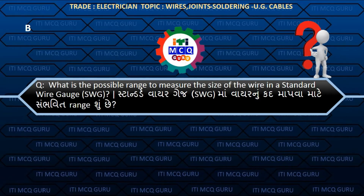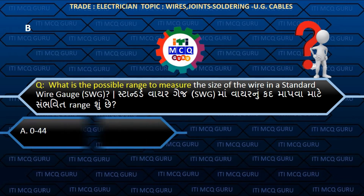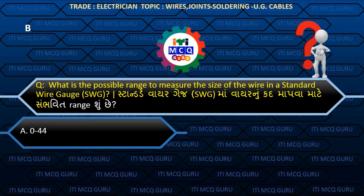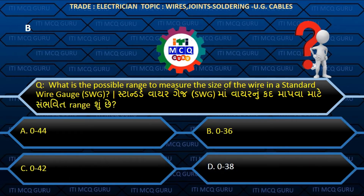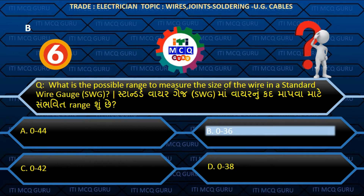What is the possible range to measure the size of the wire in a standard wire gauge? (Standard wire gauge maa wire noo kad maapva maate sambhavit range shun chhe.) Answer B: 0–36.